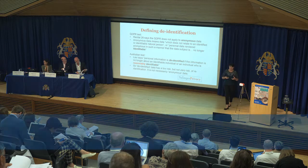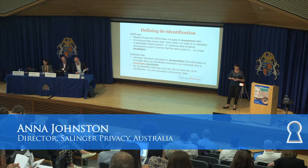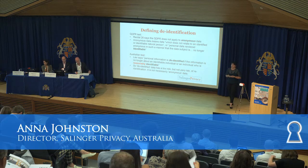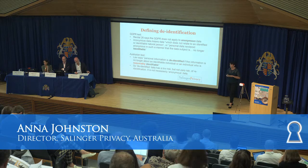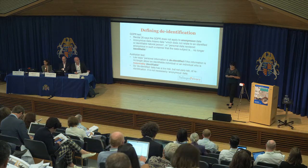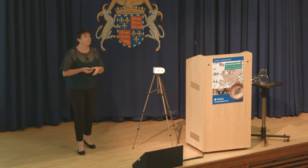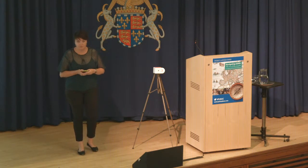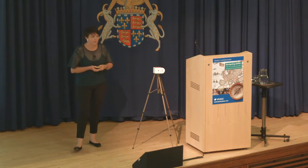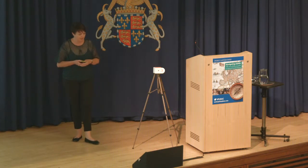Defining de-identification. The GDPR recital 26 says that the GDPR does not apply to anonymous data. This has a definition, but what it comes down to is that no one is identifiable from the data. That's what makes it anonymous, and it takes it outside the scope of the GDPR.